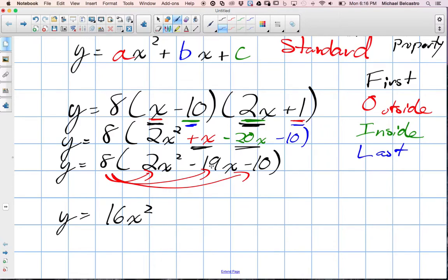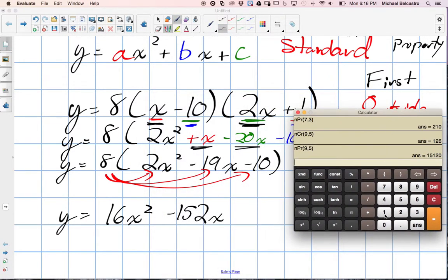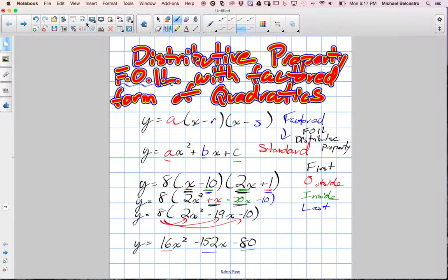8 times negative 19, that's a big number. It's going to be negative 152x. Let's check with our calculator here. Negative 19 times 8, negative 152. And finally, the last one, we have 8 times negative 10. That's negative 80. And now we're in our standard form. We have our A, we have our B, and we have our C. And none of these can be collected any farther.